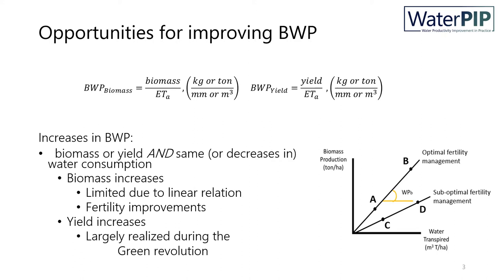In other words, the more the water consumption, the higher the biomass production, as you can see in the figure. As such, there are limited options to increase biomass production while maintaining the water consumption.